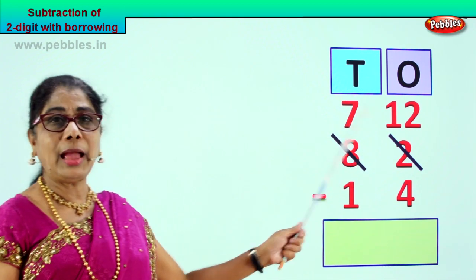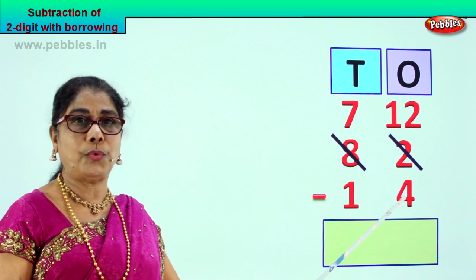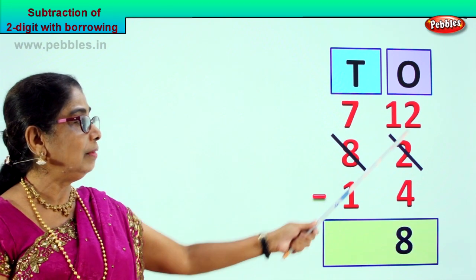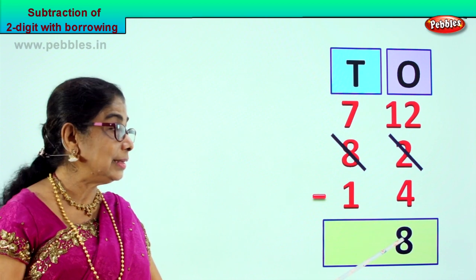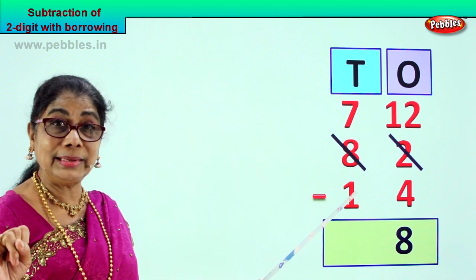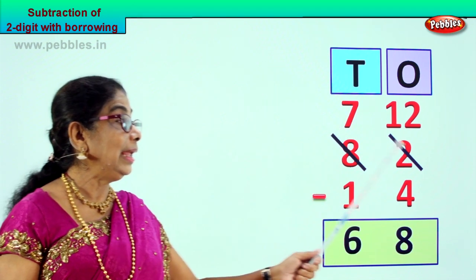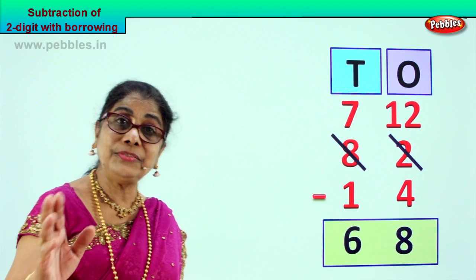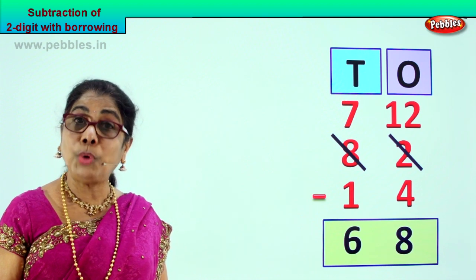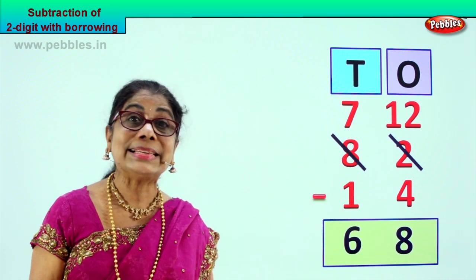Now after having borrowed, we will minus: from 12 you can take away 4. 12 minus 4 is 8. Your answer for the ones is 8. Here 7 minus 1 is 6. 82 minus 14 gives you the answer 68. 2 digit subtraction with borrowing.